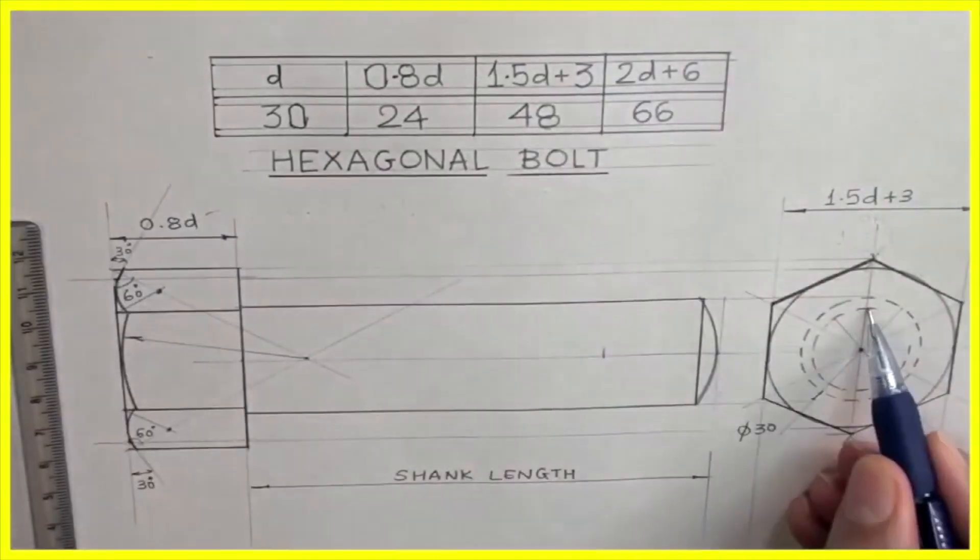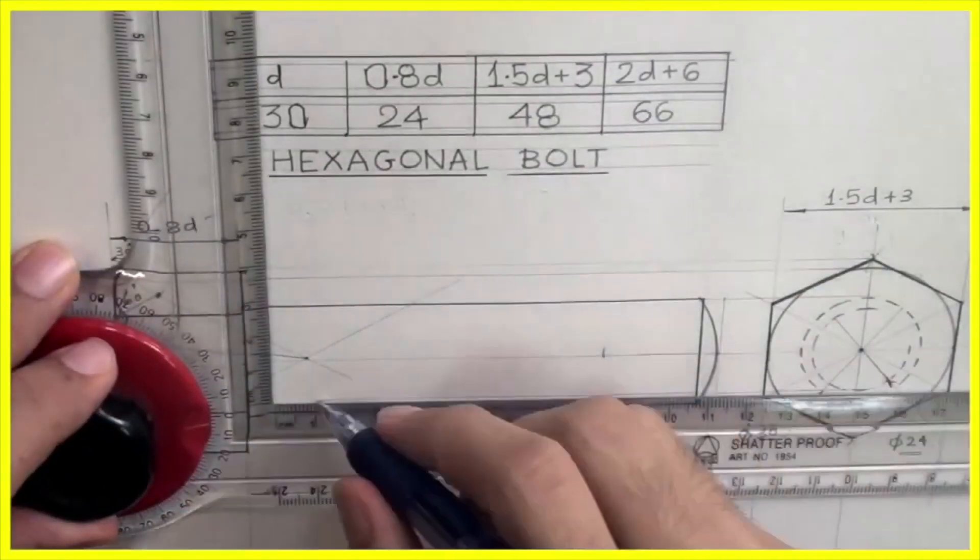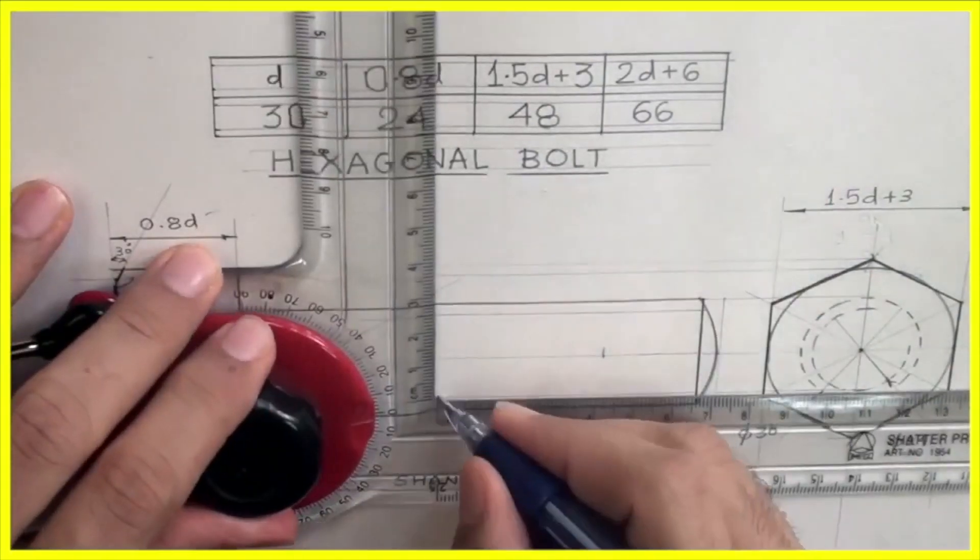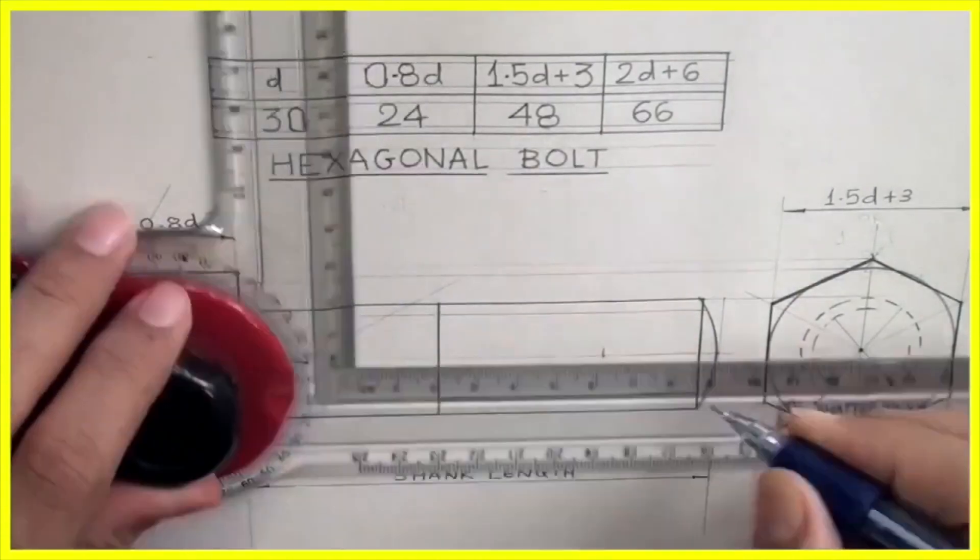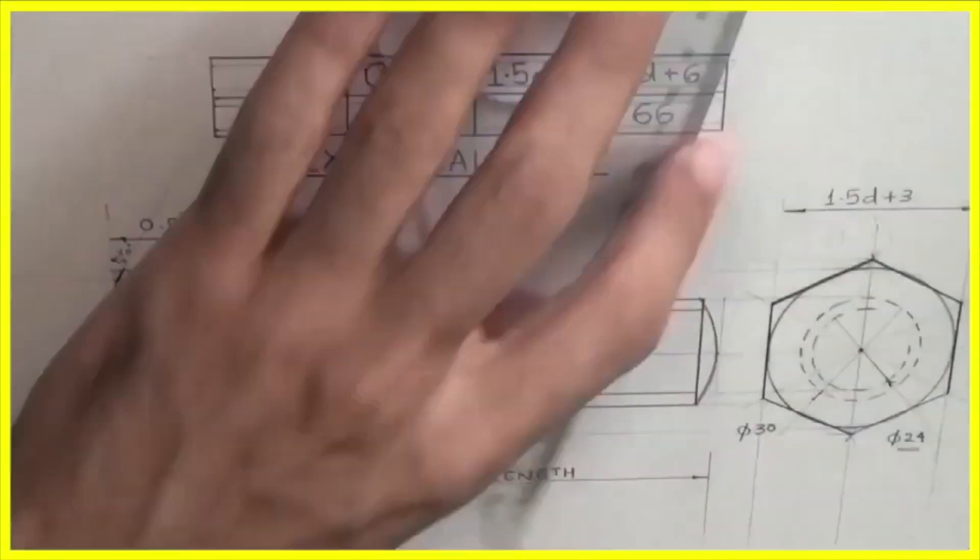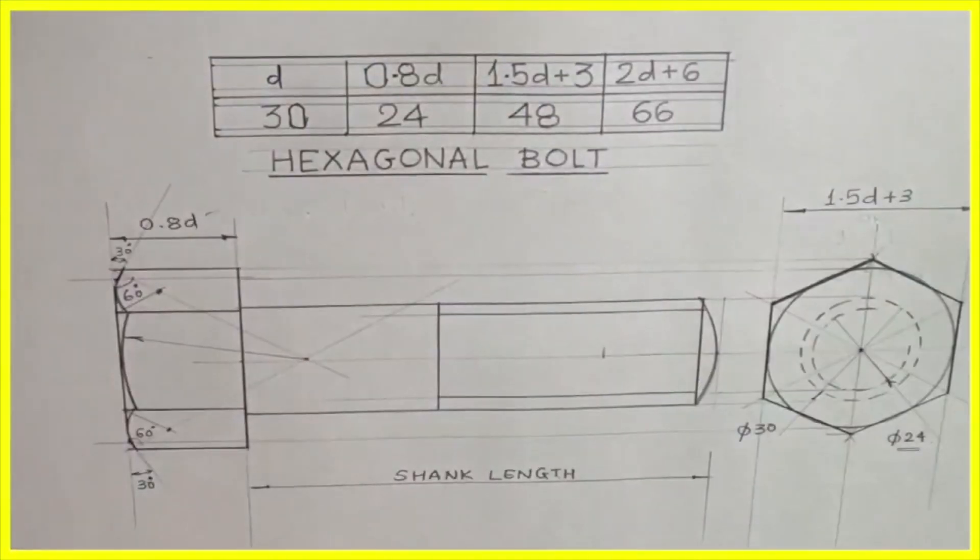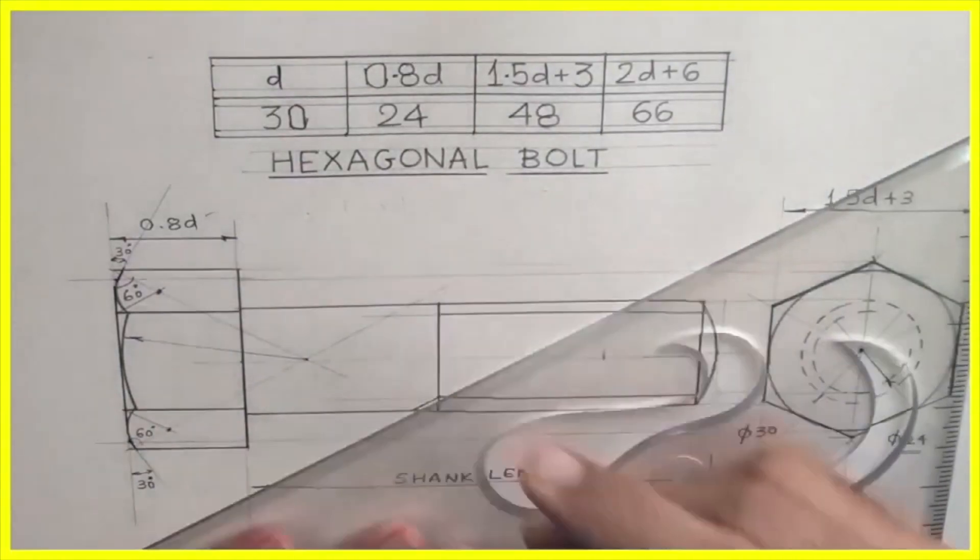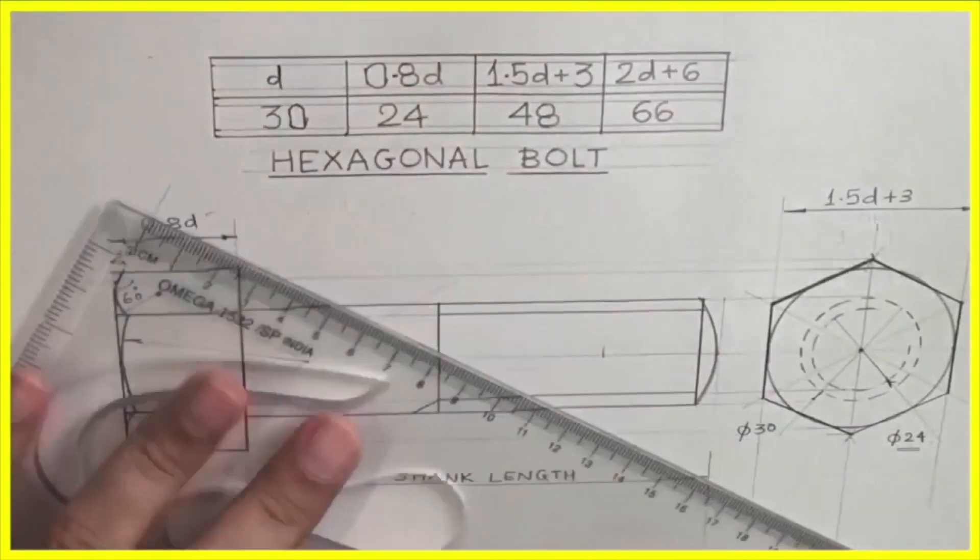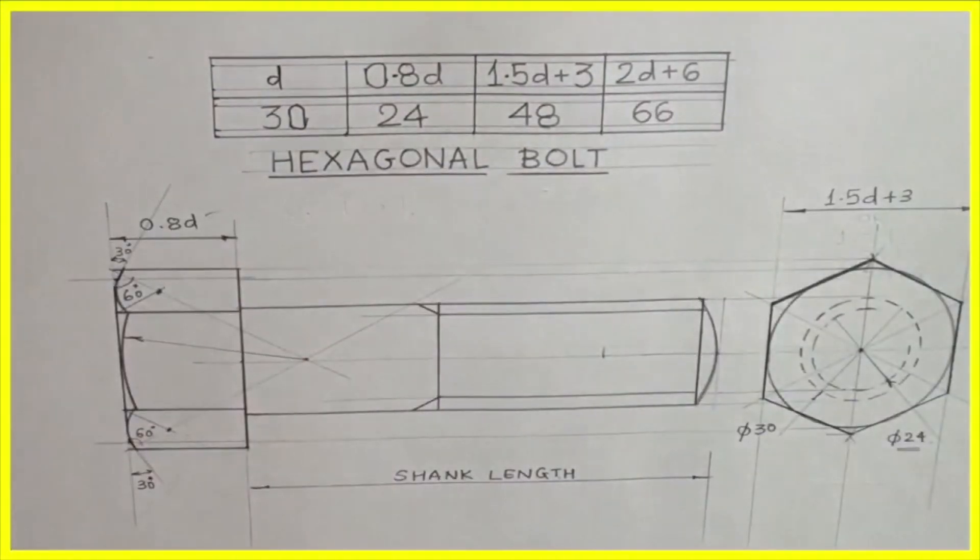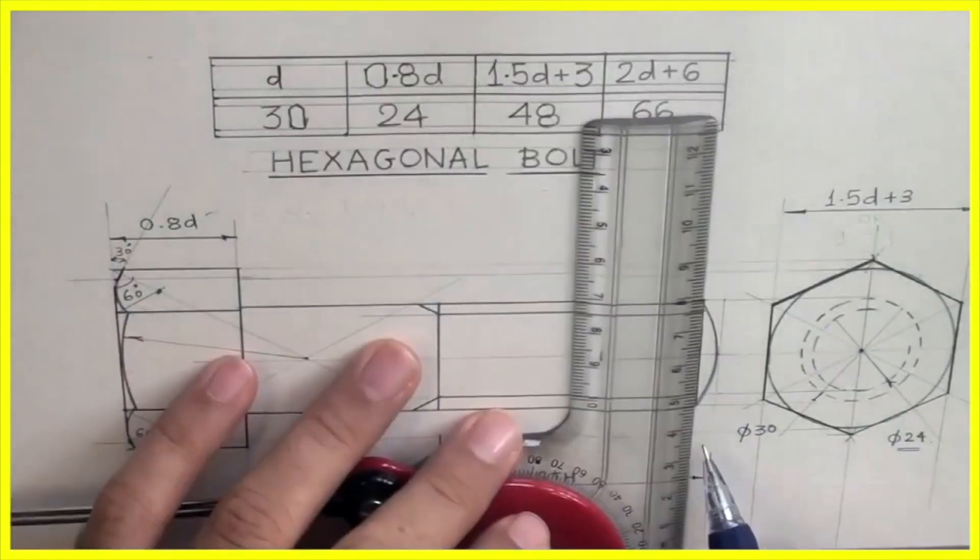Now we will extend 2d plus 6, the threading line. That will extend from 24. We will take 2d plus 6 and we will draw runoff angle. It can be 30, it can be 45, or 60, whatever you want. This is runoff angle. So we are done with threading length also, which is 2d plus 6.